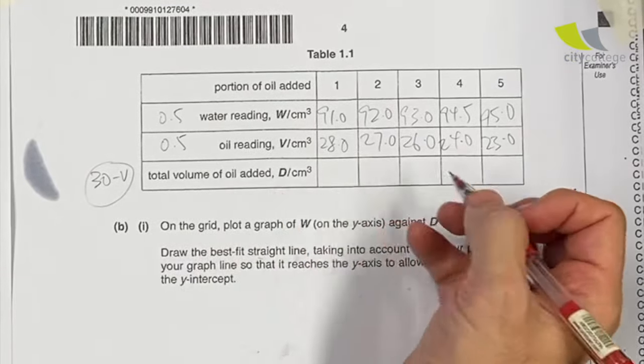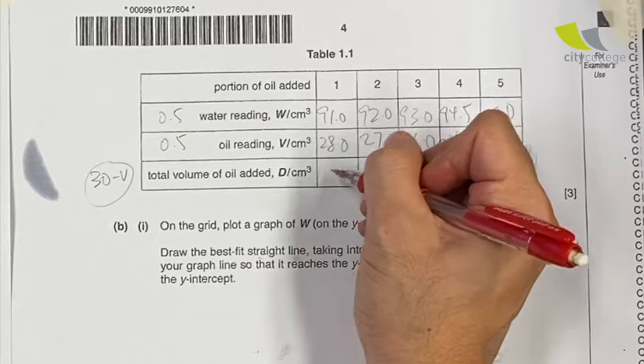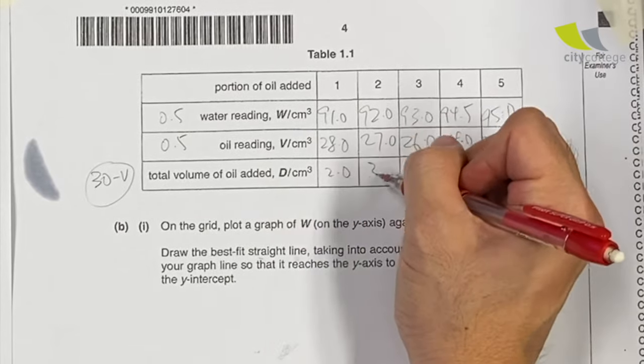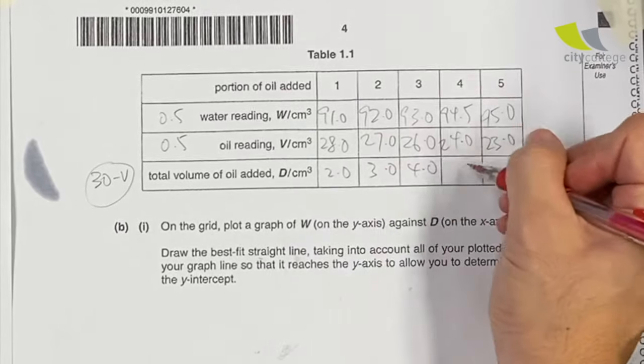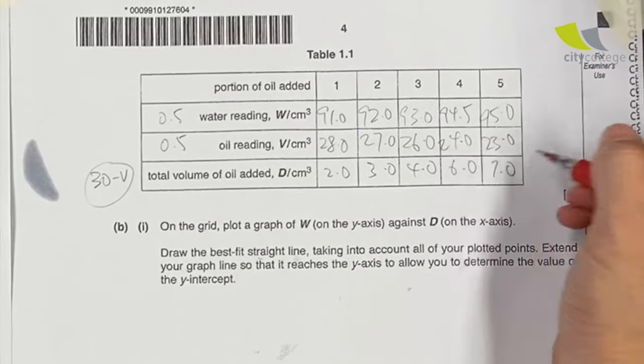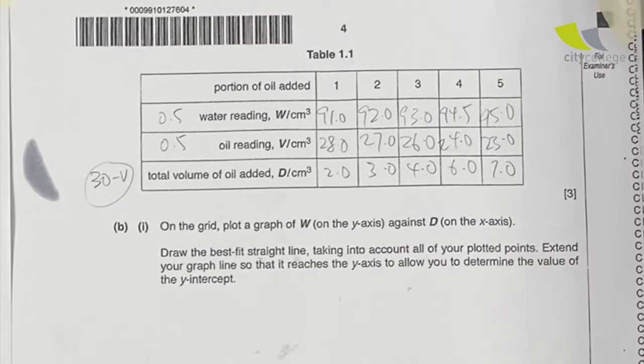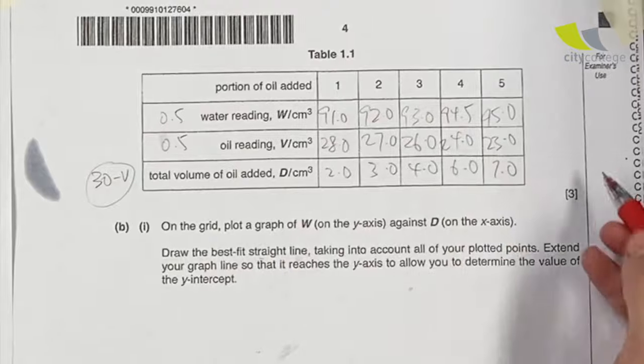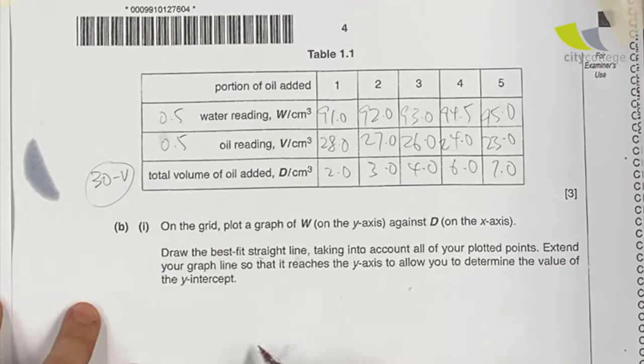I'm gonna do the calculation part. 30 minus V. So total volume oil added here will be 2.0, 3.0, 4.0, 6.0, 7.0. So I got my full table up. Make sure one decimal place. I should get these three marks.